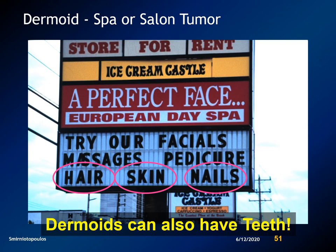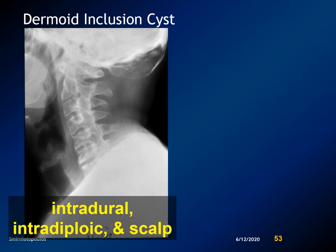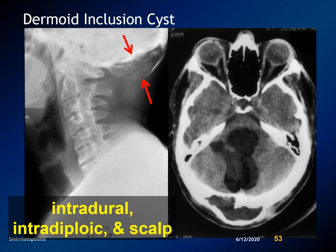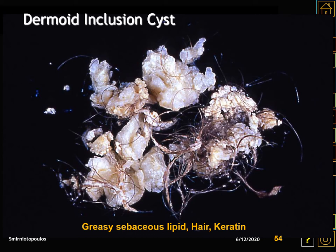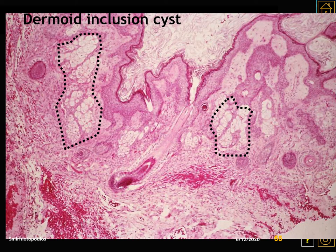It's also been rarely reported that dermoid inclusion cysts can have teeth. This is a classic example of a posterior fossa dermoid inclusion cyst. The lesion involves the scalp, the diploic space of the occipital bone, and also extends to involve the cerebellum in an intradural location. Notice the multiple areas of lipid attenuation that are very dark, just as dark as the subcutaneous fat. The contents include greasy sebaceous lipid material, hair, and keratin debris. Histologically, in addition to squamous epithelium, we have sebaceous glands, hair follicles, pilosebaceous units, and both apocrine and eccrine sweat glands.